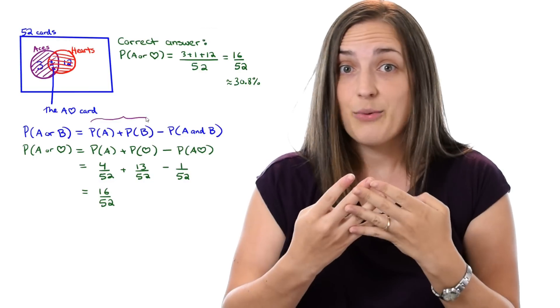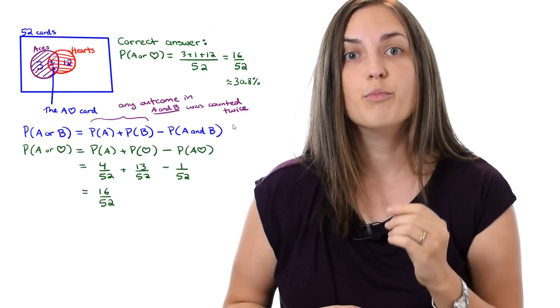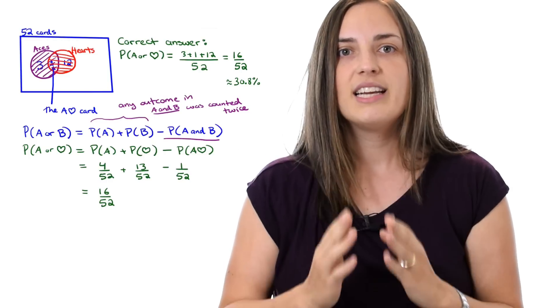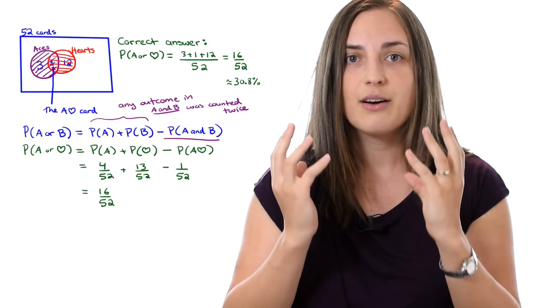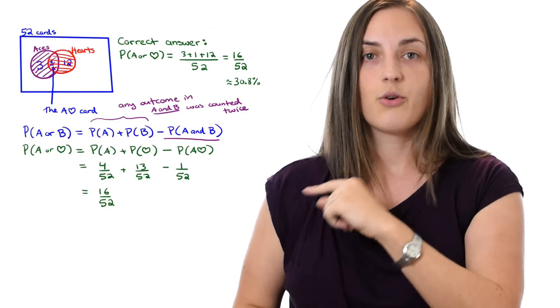But notice something. Anything that was in the intersection got counted twice. And that's no good. We need to remove that count once so that we've counted those things only once. We need to make sure that everything in the set we have is counted exactly once. That's why this equation makes sense.